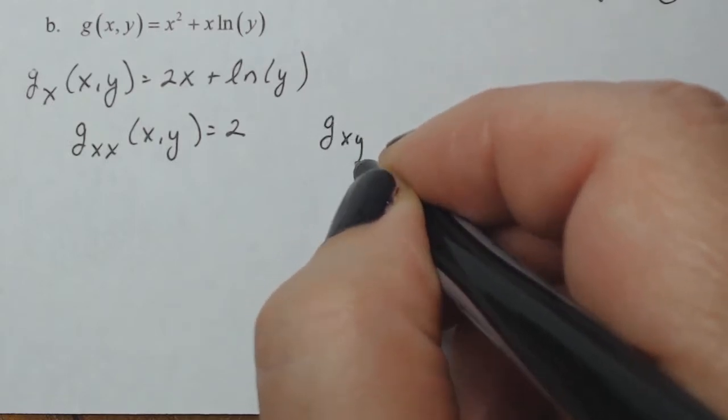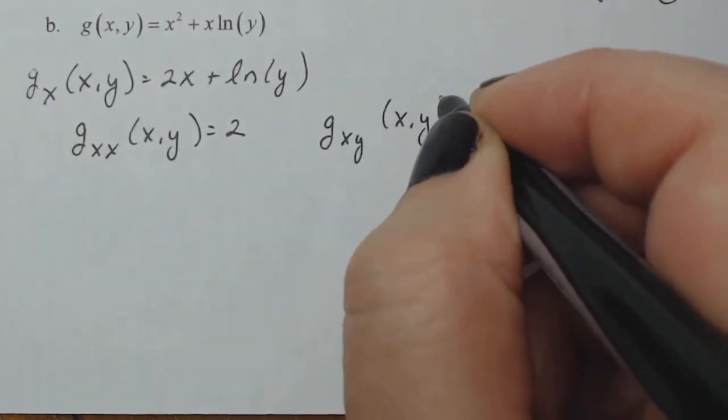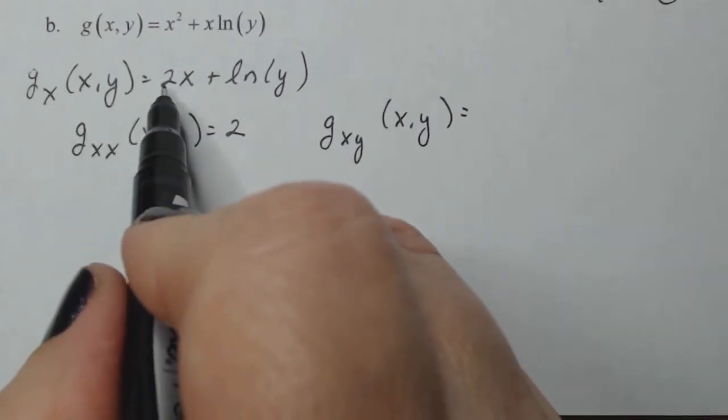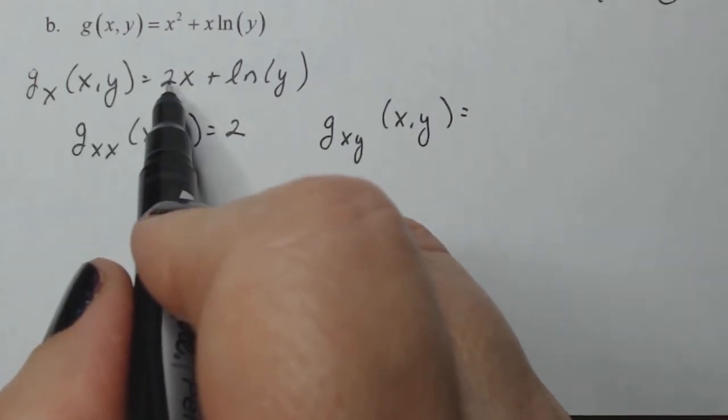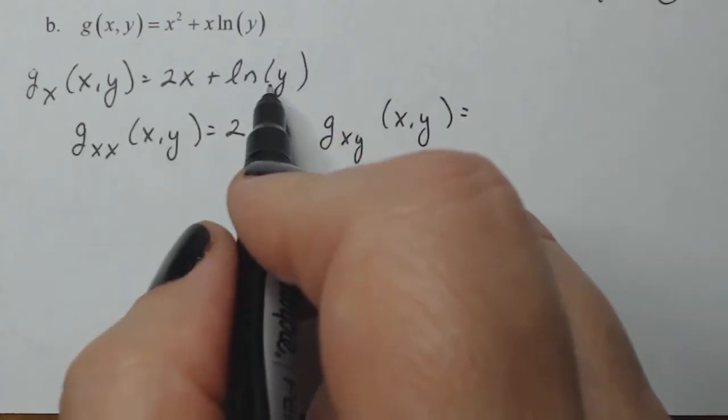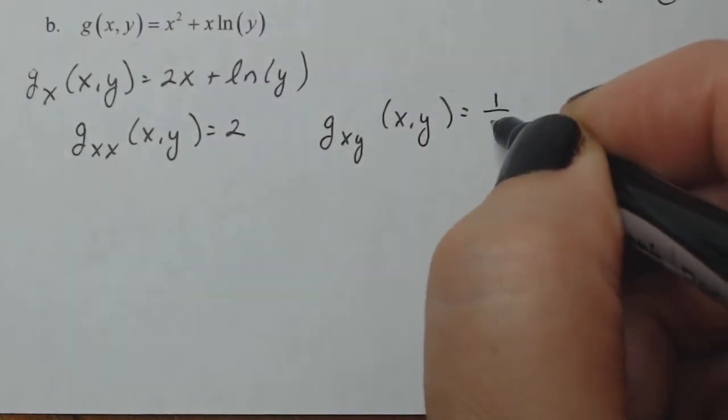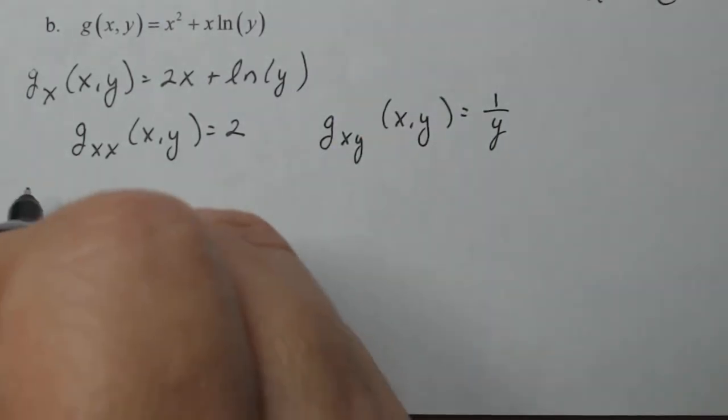G sub xy. So I'm going to take the derivative of this with respect to y, which will be zero. The derivative of this with respect to y is one over y. So far so good.